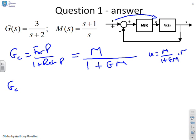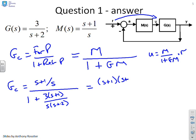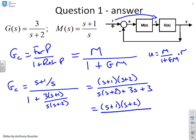I can stick the numbers into this and see what I get. So GC is going to be S plus 1 over S divided by 1 plus 3 times S plus 1 over S times S plus 2. If I multiply everything up by S times S plus 2, I get S plus 1 times S plus 2 all divided by S squared plus 5S plus 3. The closed loop pole polynomial is this polynomial, a simple quadratic you can find the roots of easily.